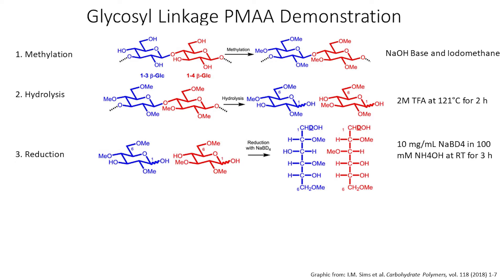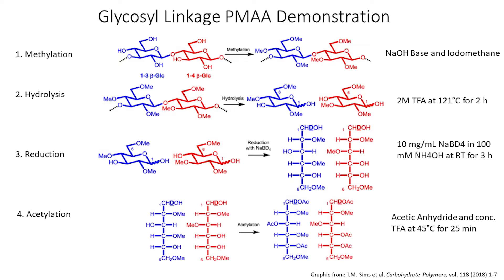The third step is reduction. We use a high concentration of sodium borodeuteride in basic condition to open the sugar chains and add a deuterium to the carbon-1 of each monosaccharide. The last step is acetylation. This step replaces the hydroxide groups with acetyl groups. This does not affect the O-methyl groups which allows us to see the original linkages on the GC-MS.